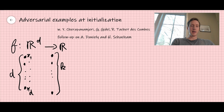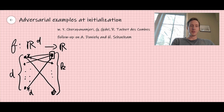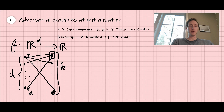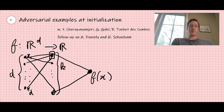This input layer is connected to a hidden layer constituted of k neurons — k is either smaller than d or bigger than d. These layers are connected through edges. Each hidden node gets a weighted combination of the input, then a nonlinear activation function — maybe the rectified linear unit or some other function — gives the output of this neuron. Then they are all linearly combined to give the output f of x.